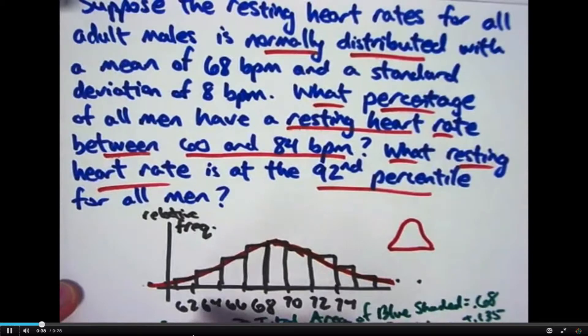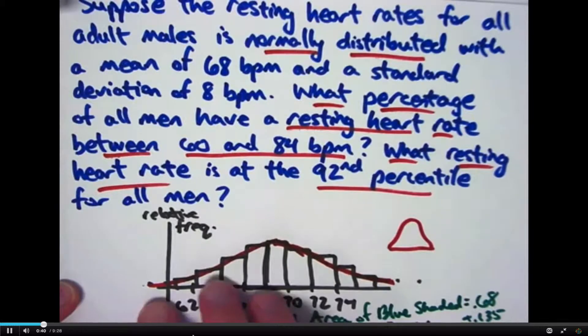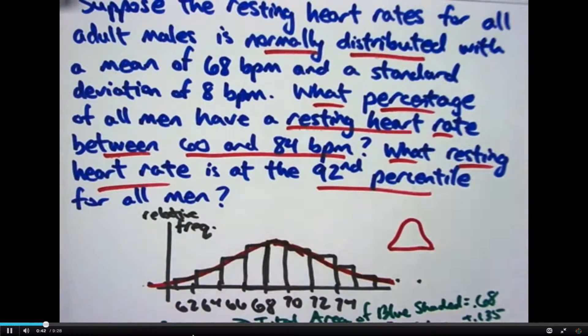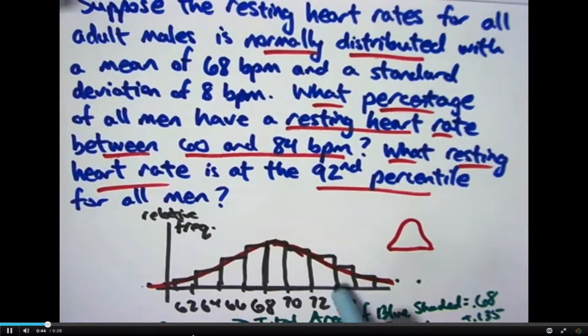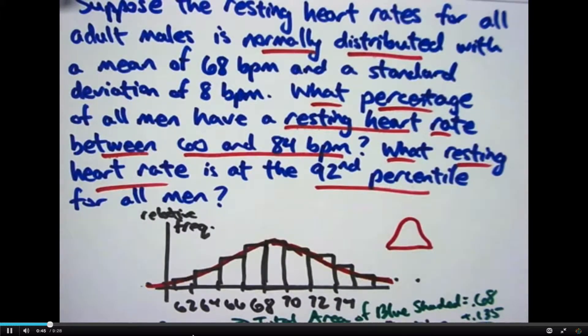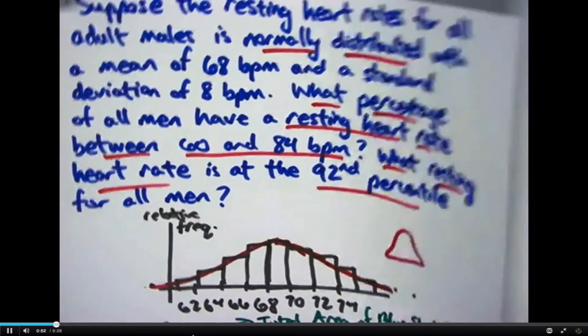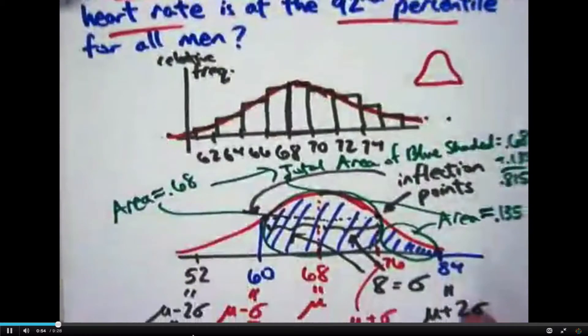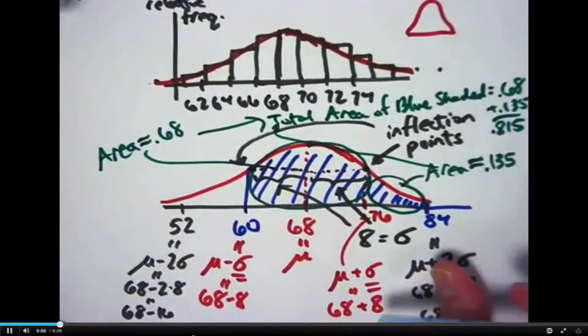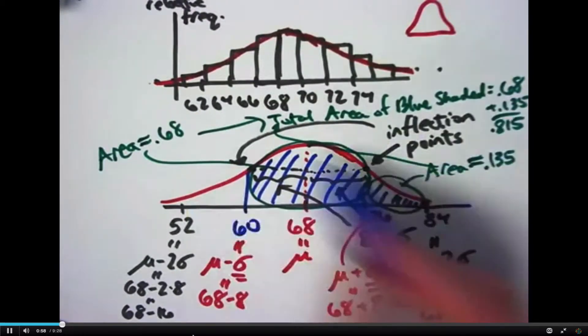Not all curves are distributions. The word distribution means that it really represents a distribution of data, as illustrated with this histogram down here. We're looking at resting heart rates for all males and saying it's normally distributed with a certain mean and a certain standard deviation. The curve approximates the histogram, and then we sort of ignore the histogram and just work with the curve.